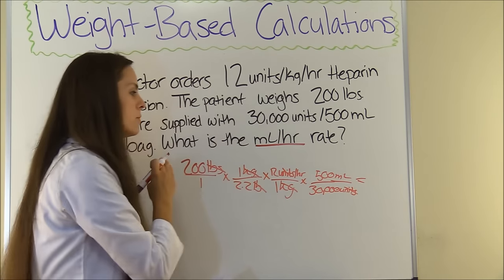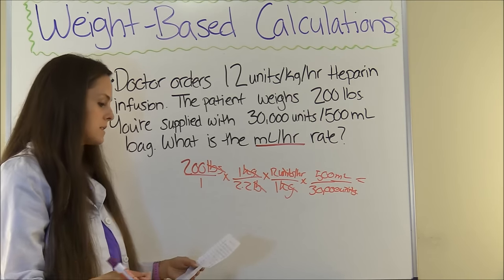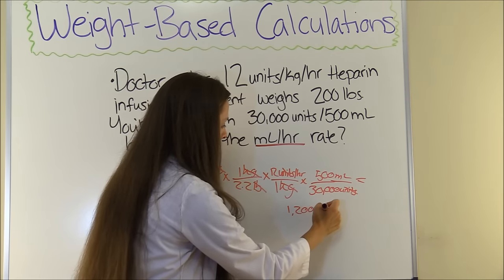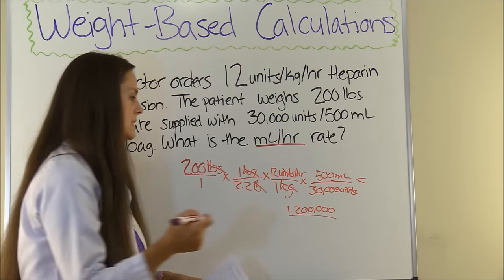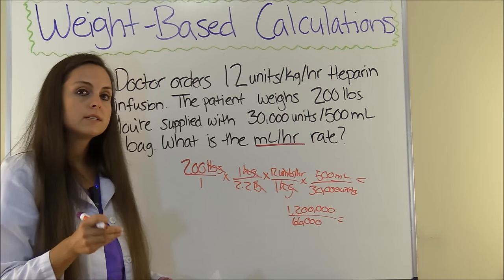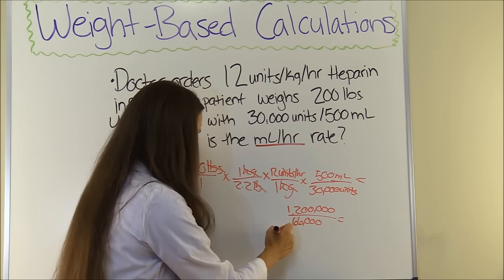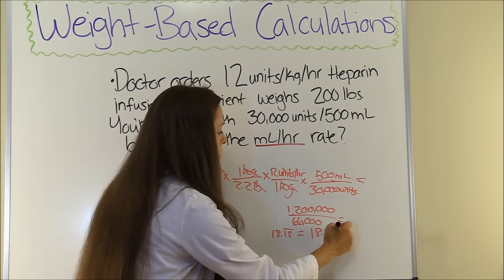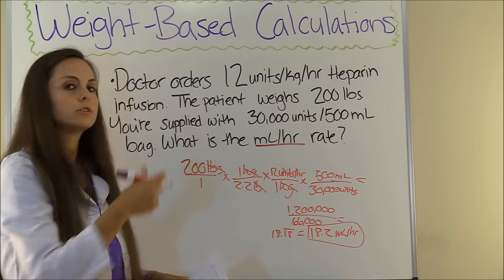We multiply everything at the top and bottom and divide. Top: 200 × 1 × 12 × 500 = 1,200,000. Bottom: 1 × 2.2 × 1 × 30,000 = 66,000. Dividing 1,200,000 by 66,000 gives 18.18 repeating, which rounds to 18.2 milliliters per hour — that is what we are going to set our pump to in order to give what the doctor has ordered.